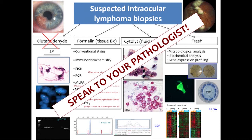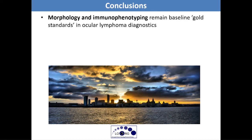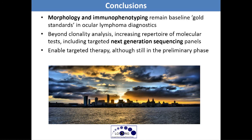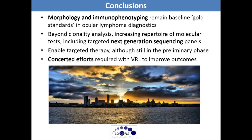In conclusion, I would suggest — and I'm a pathologist, so I would say it — morphology and immunophenotyping remain the gold standard in diagnosing intraocular lymphoma. Next-generation sequencing is very much on the horizon, if not already in practice. We need to improve our therapies for vitreoretinal lymphoma patients, who at the moment have very poor prognosis. The only way we can achieve that, because it's such a rare disease, is through concentrated efforts across Europe and across the Atlantic.